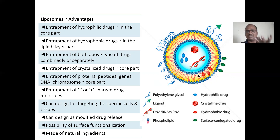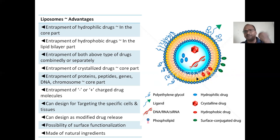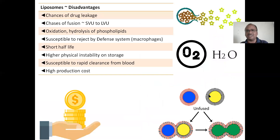Liposomes can be designed to modify drug release — controlled release, slow release — as per your needs. They are mainly made up of natural ingredients: phospholipids, polar heads, cholesterol — all natural, similar to our own cell membrane which has a lipid bilayer structure.